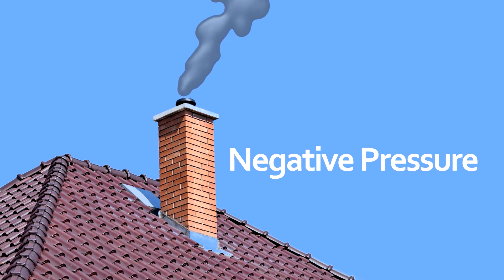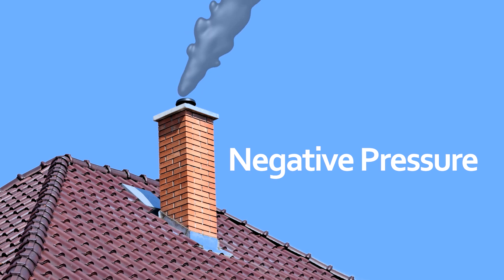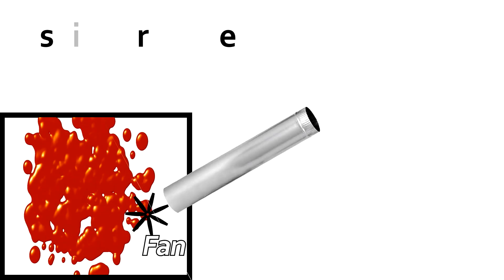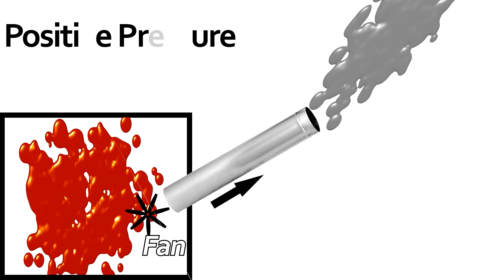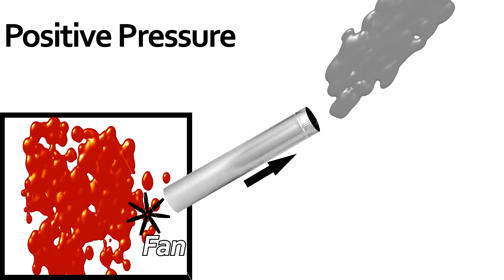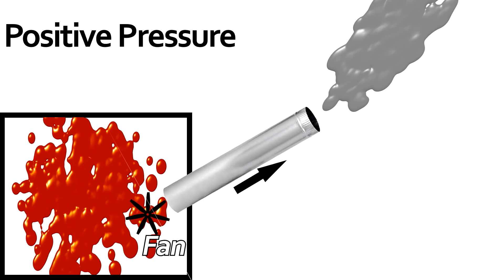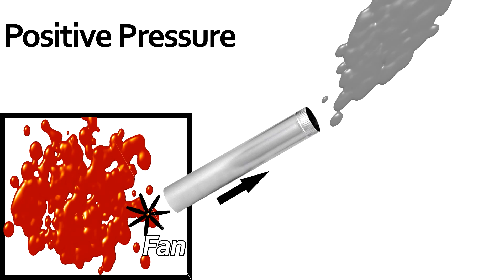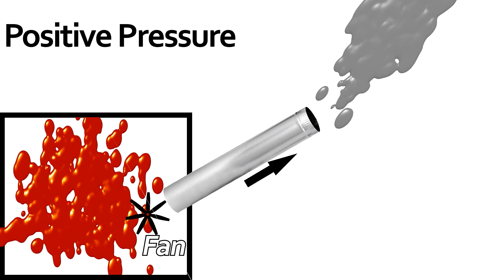High pressure, which is hot air, rises, and low pressure, which is colder air, replaces it. Positive pressure is when high pressure air is moved out of a system by unnatural forces, usually with a fan.